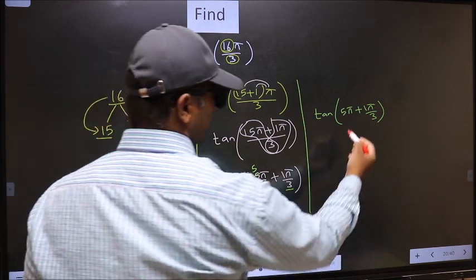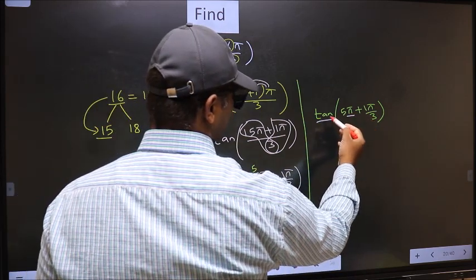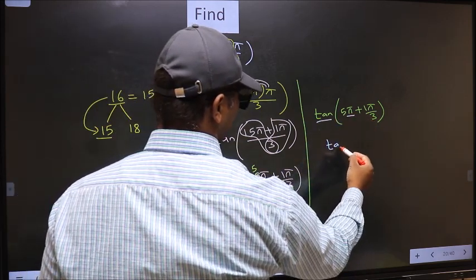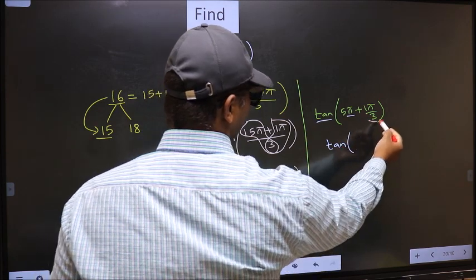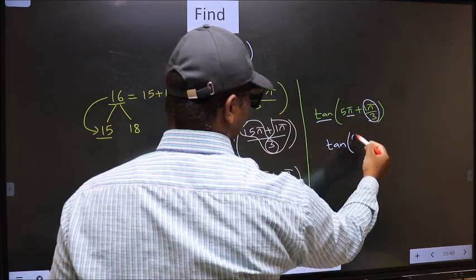Next, here we have pi. So, tan is not going to change. It will remain tan. And inside, we get this angle, pi by 3.